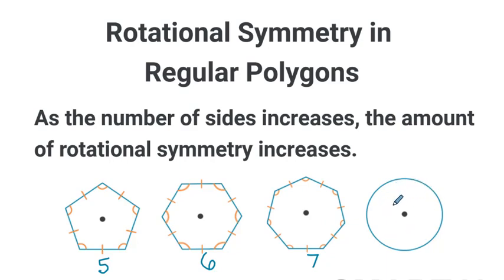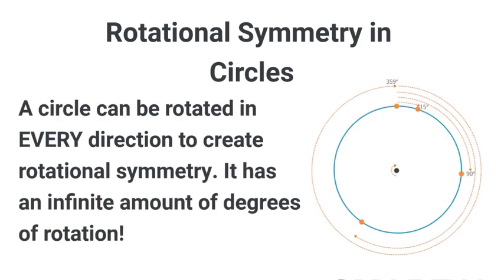This shape does not have any sides. So our last investigation is to discuss a circle. For a circle, in a circle, a circle can be rotated in every single direction to create rotational symmetry. It actually has an infinite amount of degrees of rotation. There are no sides to a circle.